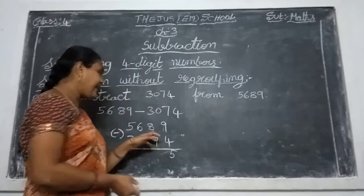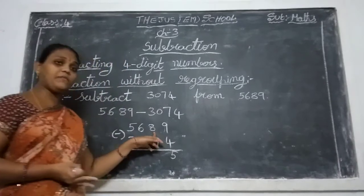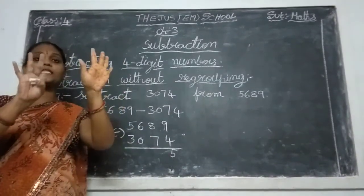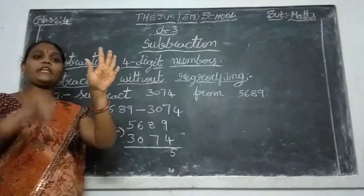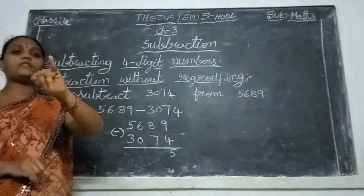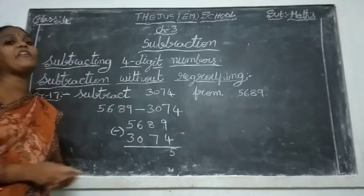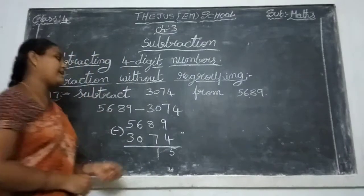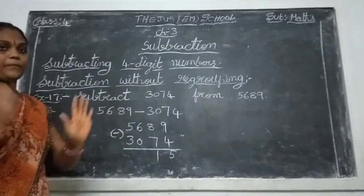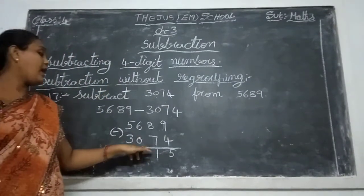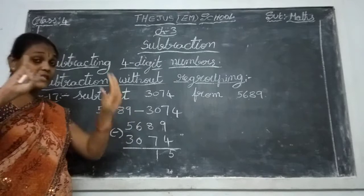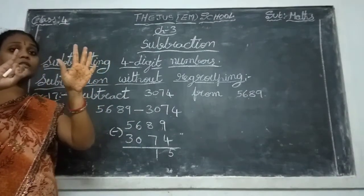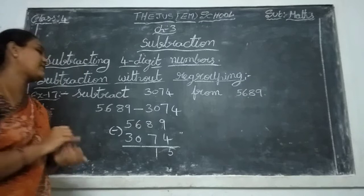Next, take eight fingers. First number is eight and second number is seven. Close fingers — one, two, three, four, five, six, seven. Rewriting — only one finger is there. So that is the answer: one. Next, take six fingers. Second number is zero. Zero means nothing — any fingers will be closed? No. So the answer is also six.